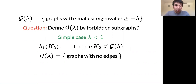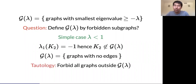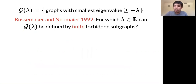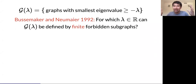This question — whether you can define G(λ) by forbidden subgraphs — has a trivial tautological answer: just forbid all graphs outside G(λ). That's not what we want. The correct question, asked by Bussemaker and Neumaier back in 1992, is: can you define G(λ) by a *finite* set of forbidden subgraphs? For λ less than one the answer is yes.